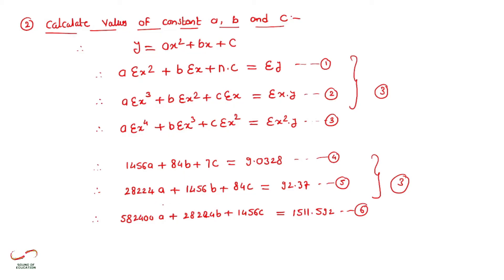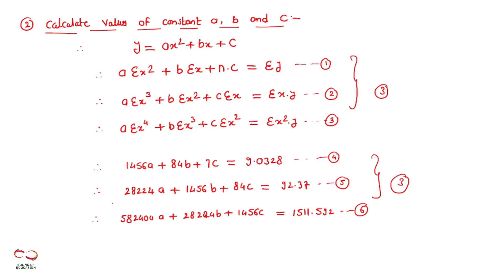Sb se pehle aapko matrix form mein convert karna padega. Uske baad matrix form mein convert karne ke baad aapko use upper triangular matrix mein convert karna padega. Upper triangular matrix matlab all the elements below the principal diagonal are 0 and principal diagonal ke sare elements aapko one karna padega. Fir backward substitution method use kariyye gah to get the values of A, B, and C.